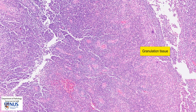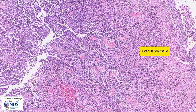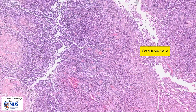Another feature that may be seen, particularly in the periphery of an abscess, is the presence of granulation tissue. At this magnification, we can see some of these small, immature blood vessels, which are quite leaky. This is granulation tissue, and it is part of the healing process from inflammation.